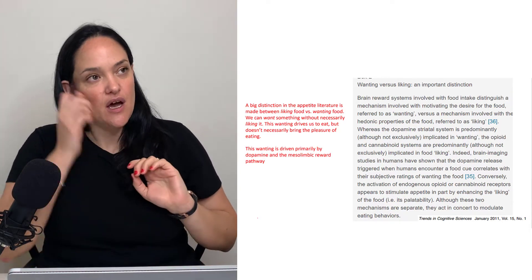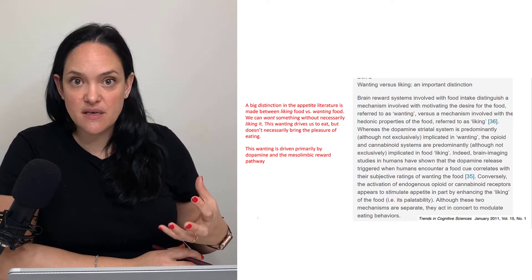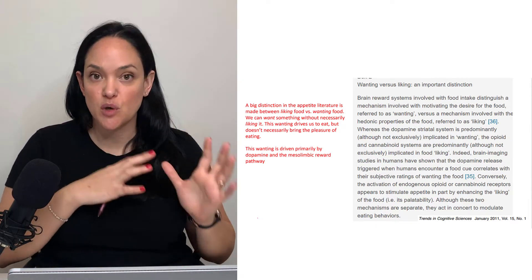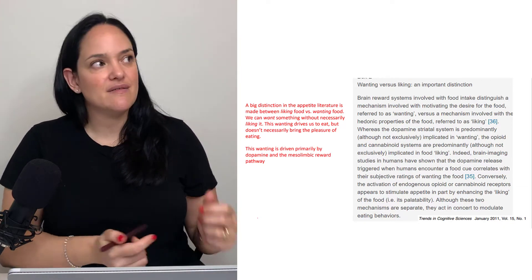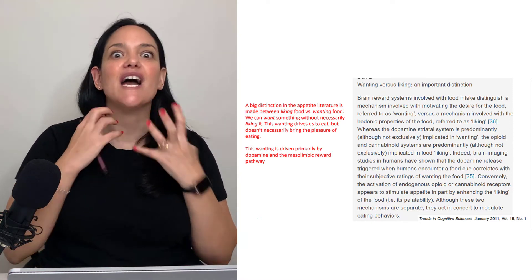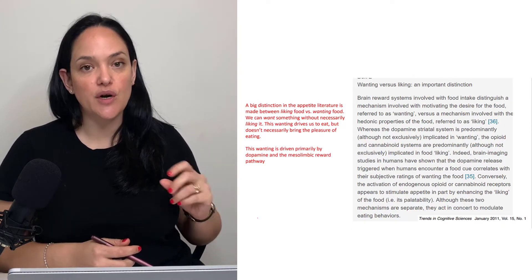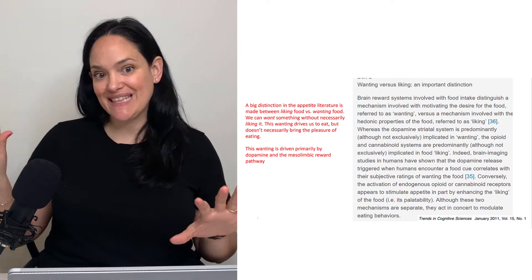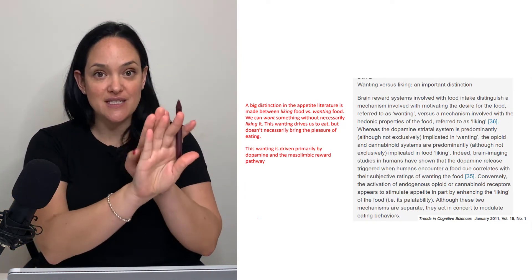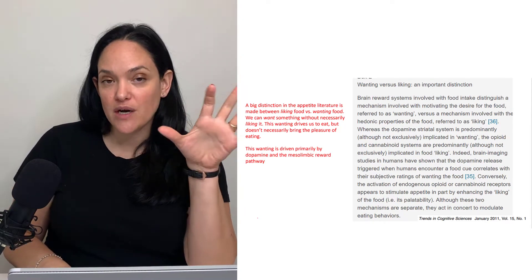Dopamine is more involved in the wanting of things as opposed to the liking of things. A good example is someone with a drug dependency — they want the drug intensely, but when they get high, they don't even like it. There's this driving need to get it. We believe that wanting of a particular reward is more driven by dopamine than the liking of it. These are not the same thing.